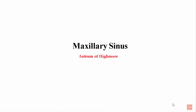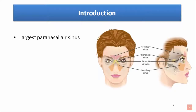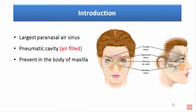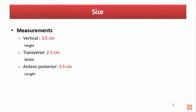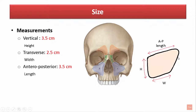Welcome to MediClass. The maxillary sinus is the largest paranasal air sinus. It is an air-filled cavity, also called a pneumatic cavity. It is present in the body of maxilla and is bilaterally present. The maxillary sinus is pyramidal in shape and has a vertical height of 3.5 cm, a transverse width of 2.5 cm, and an antero-posterior length of 3.5 cm.